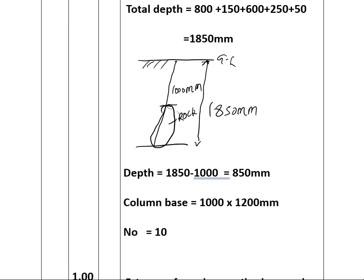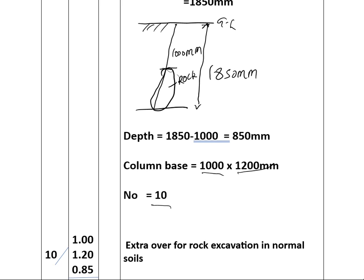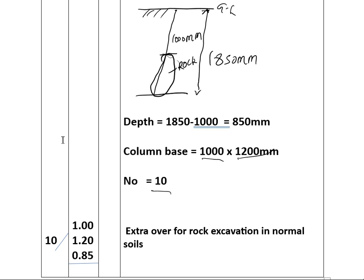The column at the base is where we are doing the excavation — we are excavating 1000 by 1200 millimeters, and we have ten columns. We need the volume of the extra over excavation, so we take the length multiplied by the width multiplied by the depth. Our length is 1.0, the width is 1.2, and the depth is 0.85 meters.